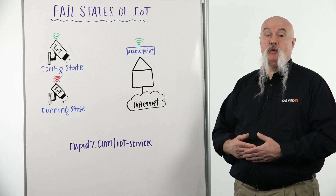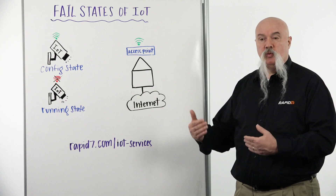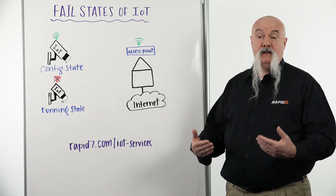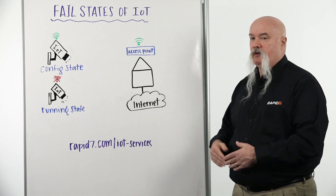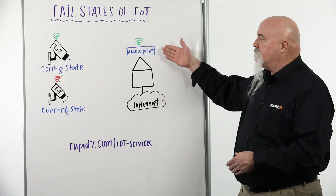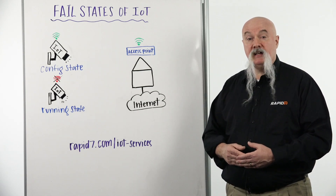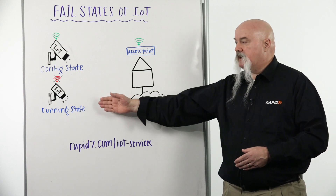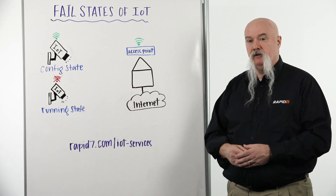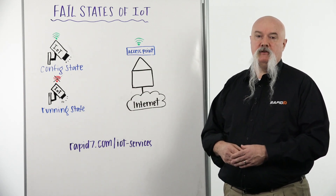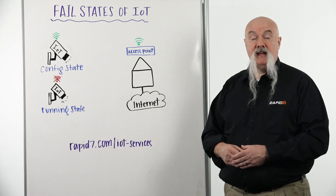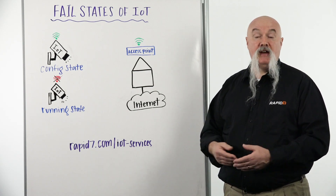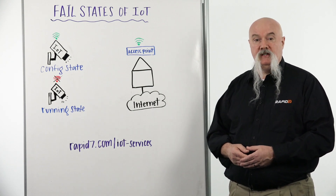This is an issue we want to not happen, and it's one of the areas we like to test for. We've often encountered devices where that's exactly what happens. If something happens to the access point, or an attacker sends de-auth packets to an access point, the device fails into a configuration state. Within that configuration state, an attacker could easily attach to that device, gain various levels of access, or even possibly reconfigure the device.